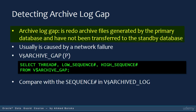Archive log gap refers to the redo archive files generated by the primary database that have not been transferred to the standby — usually due to a network failure. In a physical standby database, you can use the V$ARCHIVE_GAP view to obtain the sequence number of redo received by the standby and compare it with the latest sequence number generated by the primary, obtained from the sequence number column in the archived log table. I will show you the query in the next slide.